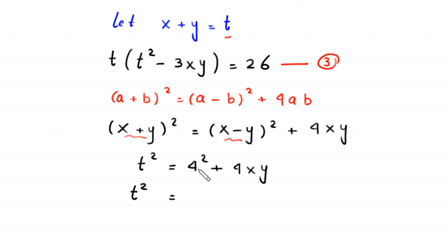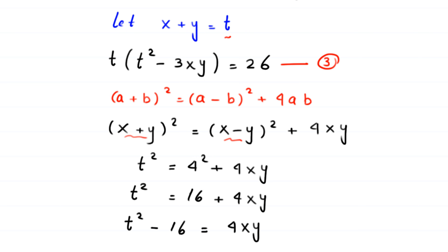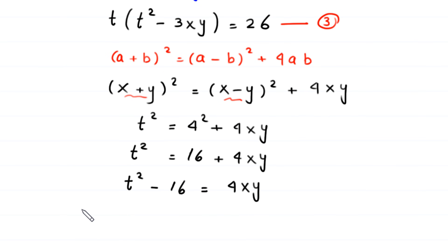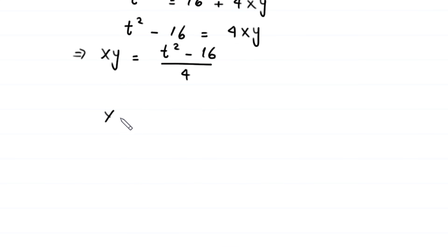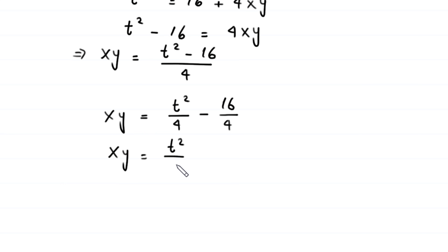Next, t squared equals 16 plus 4xy. Moving 16 to the left hand side gives t squared minus 16 equals 4xy. Dividing both sides by 4, this implies xy equals t squared minus 16 over 4, which can be written as t squared over 4 minus 4.